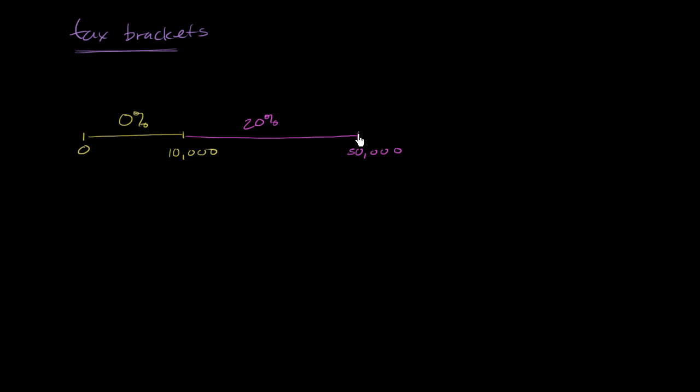And let's just say, this is very simple, much simpler than any actual tax codes out there. Anything above $50,000, you pay 30% of your income. Now, the reason why I say there's confusion here is many people feel that if their income throws them into a bracket, they pay that percentage on all of their money. But that's not the way it works.